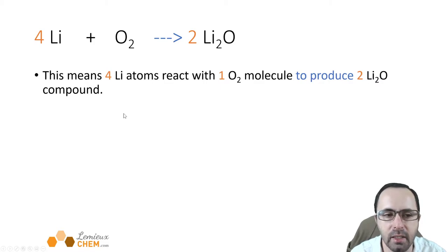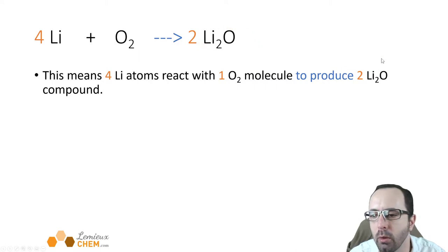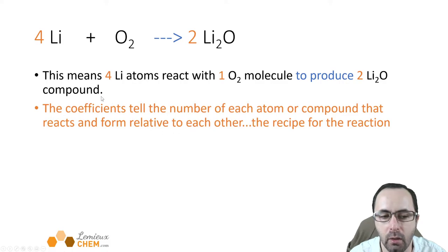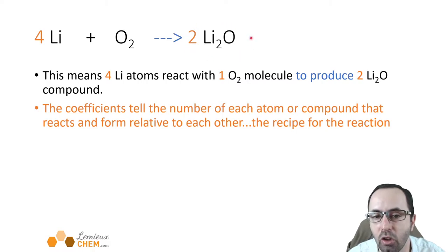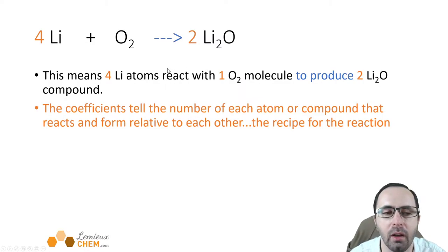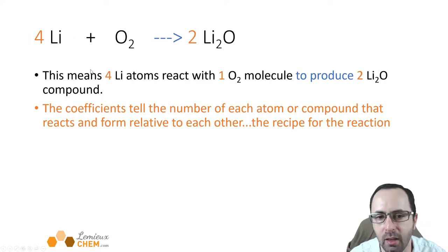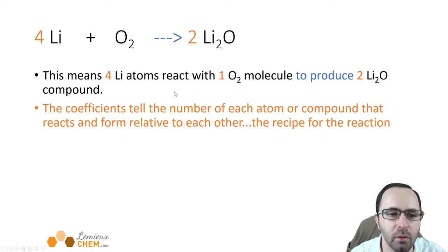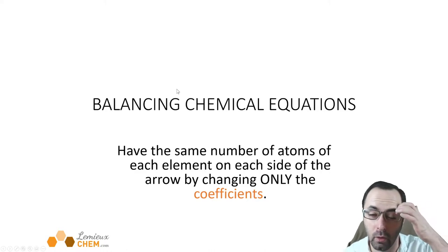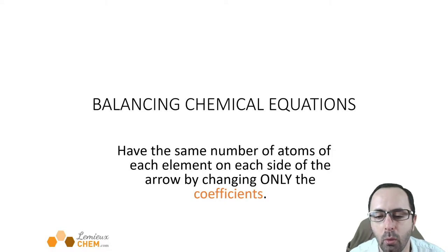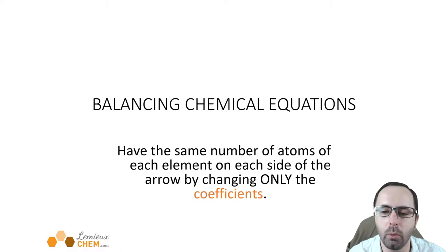Four lithium atoms react with one oxygen molecule and produce two lithium oxide units. The coefficients tell us how many of each atom, ionic compound unit, or molecule we have — it's like a recipe. If you are making a sandwich, you might have one slice of cheese and maybe four pickles. It's very much like a recipe, but a recipe that has to do with atoms and molecules. When we are shown a chemical equation, we often don't have those coefficients already there, so we have to put them in to make sure that the atoms we start with are the atoms we end with.